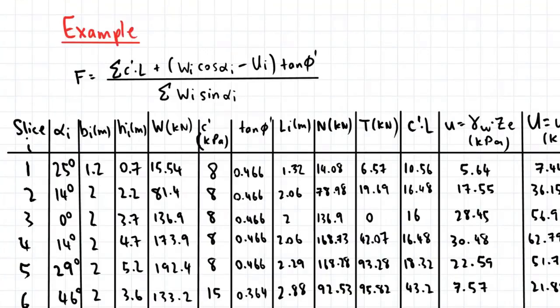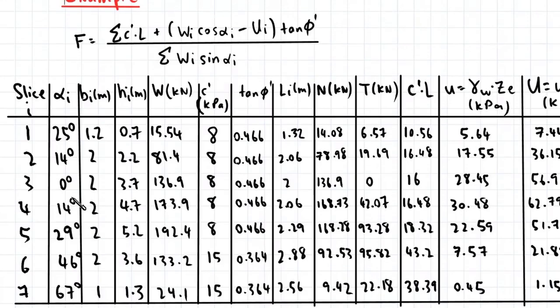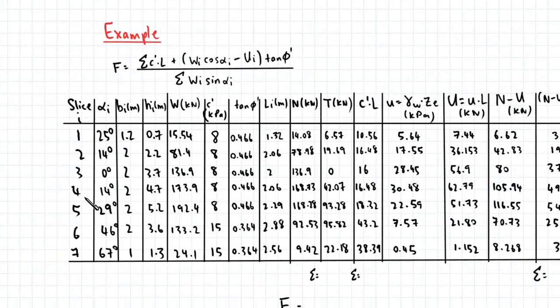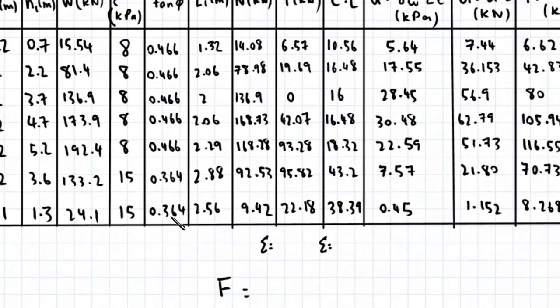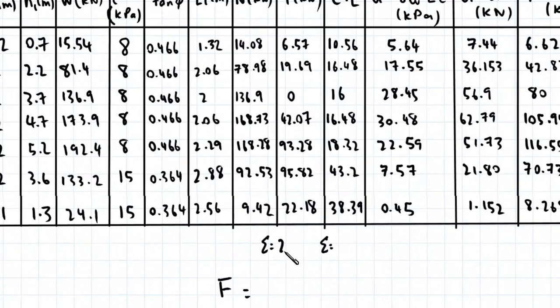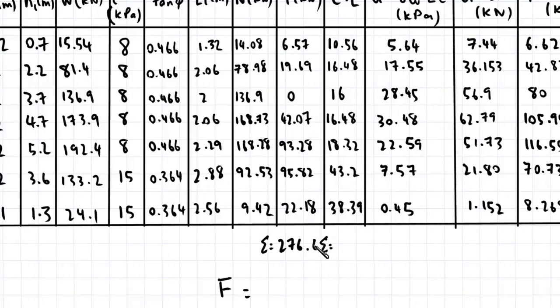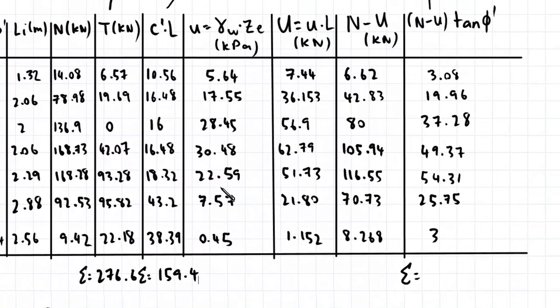So once you've finished filling out the table, you should have these numbers here. So I'll just zoom this out a bit so you can see. And now we need to find the sum of this column here. That's W sine alpha. This column as well as this column. And the sum of these values work out to be 276.6, 159.4, and for this last column, 193.8.